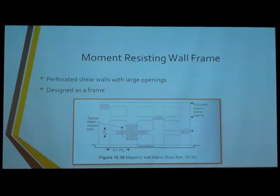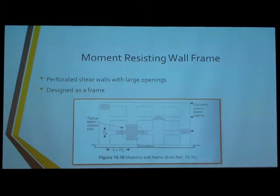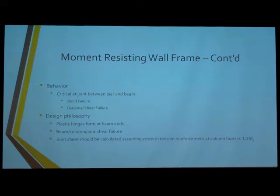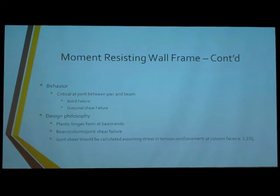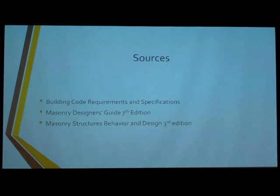Finally, moment-resisting wall frames are basically a giant shear wall with holes in it — instead of treating it as four separate shear walls, you look at it as one giant shear wall. This is an alternate design approach. If you design it as a frame, keep in mind the critical joint between the pier and the beam — often called a column and a pier — and potential bond failure or diagonal shear failure. The design philosophy is that plastic hinges form at the ends of beams (beam-column joint shear failure), and the code uses 1.25·Fy when assuming tension.